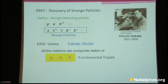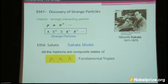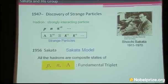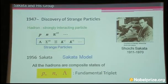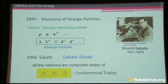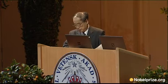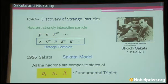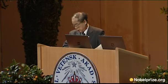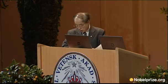In the early 1950s, a number of strange particles were discovered. Their first evidence was found in a cosmic ray event in 1947. In the current terminology, strange particles contain the S quark or anti-S quark as a constituent, while non-strange particles do not. In 1956, Sakata proposed a model known as the Sakata model. In this model, all hadrons — hadron means strongly interacting particle — strange and non-strange, are supposed to be composite states of the fundamental triplet P, N, and lambda.